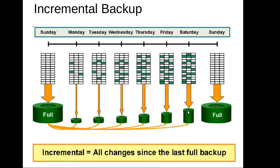For example, if I took a full backup on Sunday and take an incremental on Tuesday, the Tuesday image will contain all changes made since Sunday — including Monday's and Tuesday's changes. So if you need to restore to Saturday, you only need to restore two images: the full backup and the Saturday incremental. It is a cumulative kind of backup where each incremental contains all changes since the last full backup.